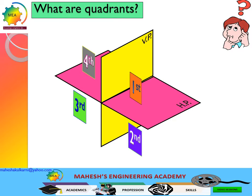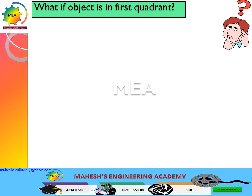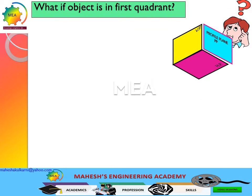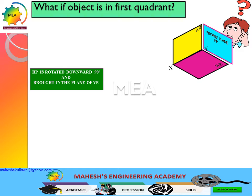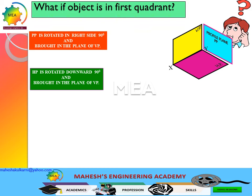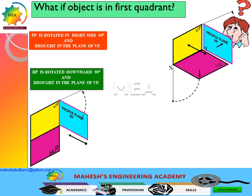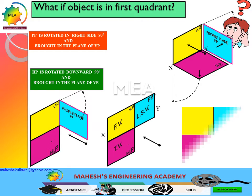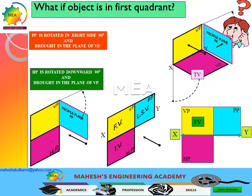Let us examine placing an object in different quadrants. What if the object is in the first quadrant? We have the vertical plane, horizontal plane, and profile plane. As per the principle of projections, the horizontal plane will be rotated 90 degrees downwards and brought into the plane of the vertical plane. Similarly, the profile plane is rotated 90 degrees to the right and brought into the plane of the vertical plane. When these planes are rotated, the front view is projected on the vertical plane, the top view is projected on the horizontal plane, and the side view is projected on the profile plane.